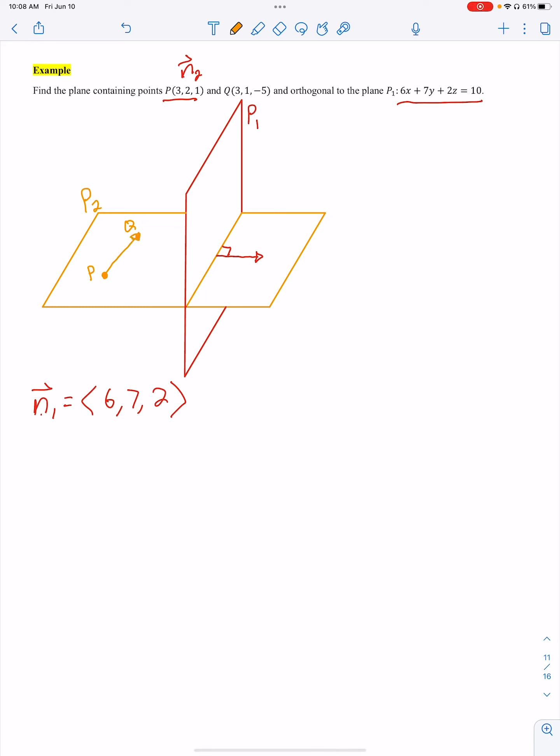I can create a vector right here. Let's call it V1. So let's go ahead and find V1. V1 is just PQ. So I got Q minus P. I got 0, negative 1, and negative 6.